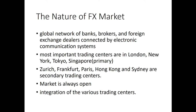High-speed computer linkages between trading centers around the globe have effectively created a single market. The integration of financial centers implies there can be no significant differences in exchange rates quoted in the trading centers. For example, if the yen/dollar exchange rate quoted in London at 3 p.m. is 120 yen to $1, the rate quoted in New York at the same time — 10 a.m. New York time — will be identical, to prevent arbitrage.